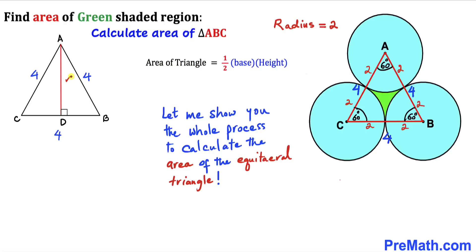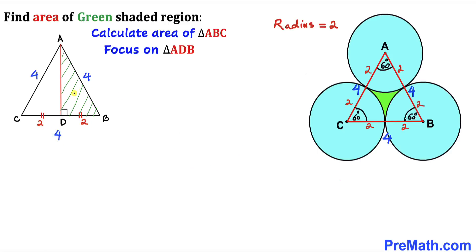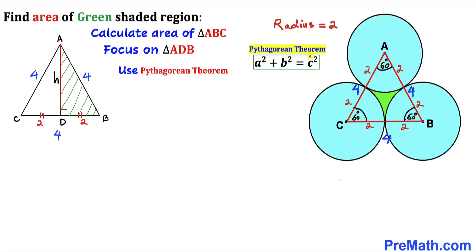I have dropped a perpendicular AD on side BC, so side lengths CD and BD are equal in length. The whole length is 4, so each of those sides is 2. Now let's focus on triangle ADB and calculate the height H, which is AD. Since triangle ADB is a right triangle, we are going to use the Pythagorean theorem: A squared plus B squared equals C squared.